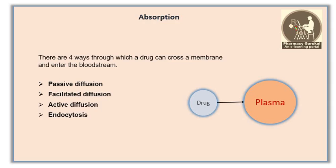There are four ways through which a drug can cross a membrane and enter the bloodstream. The first is passive diffusion, when molecules move from an area of high concentration to an area of low concentration. The second is facilitated diffusion, when a molecule moves from high to low concentration with the help of a carrier protein in the membrane.